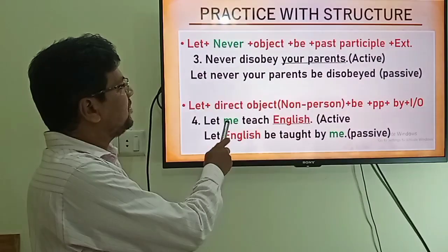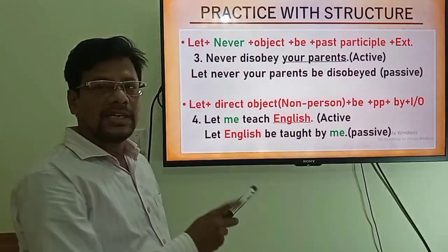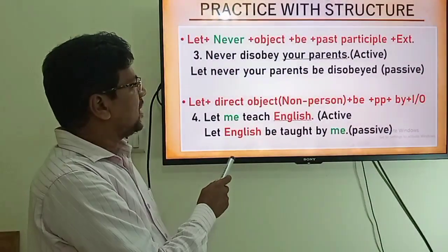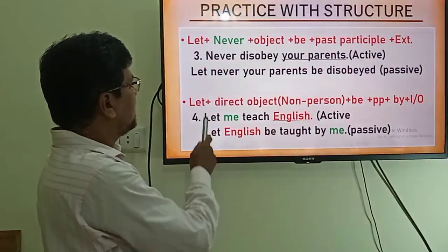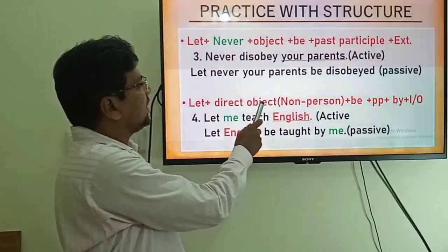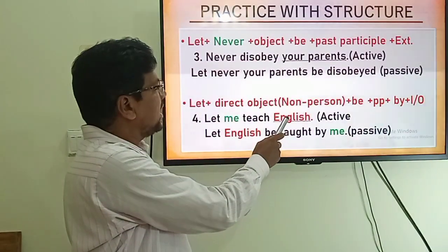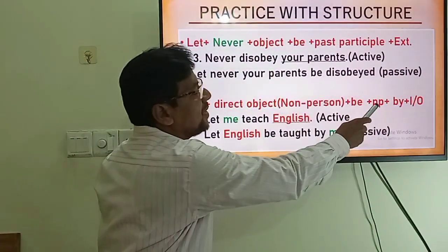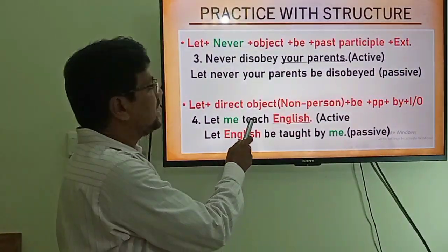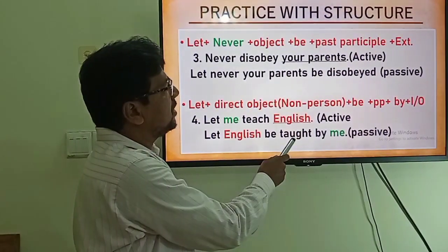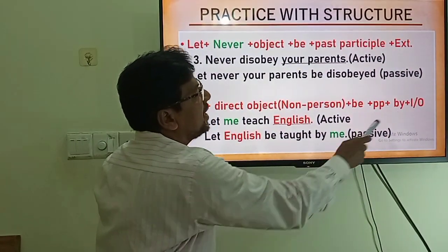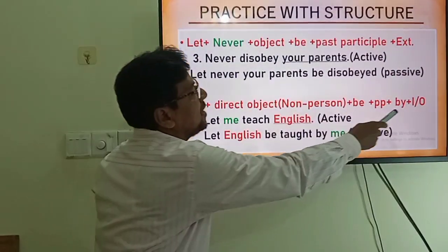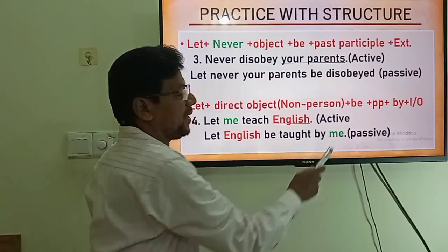Number four: 'Let me teach English' — that is active voice. There are two objects: 'me' (indirect object) and 'English' (direct object). The rule: Let + direct object + be + past participle + by + indirect object. So: Let + direct object 'English' + be + past participle 'taught' + by + indirect object 'me'. That is the passive voice.